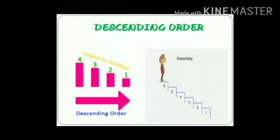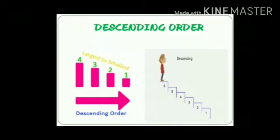We have to start from big numbers and end on the small numbers. In the next picture you can see the man is climbing down the stairs. The numbers shown are 6, 5, 4, 3, 2, and 1. He is coming down. Descending order means to come down from big to small.